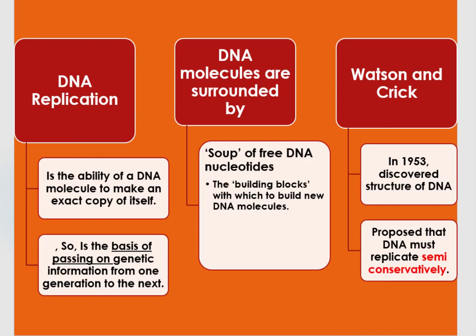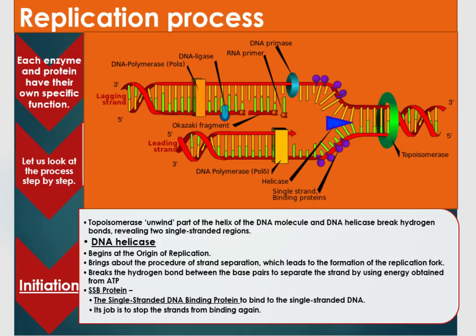They proposed that DNA must replicate semi-conservatively. In the DNA replication process, there are enzymes and proteins that each have their own responsibility or function. DNA replication process has three main phases: initiation phase, elongation phase, and termination phase. Let us look at the process step by step.